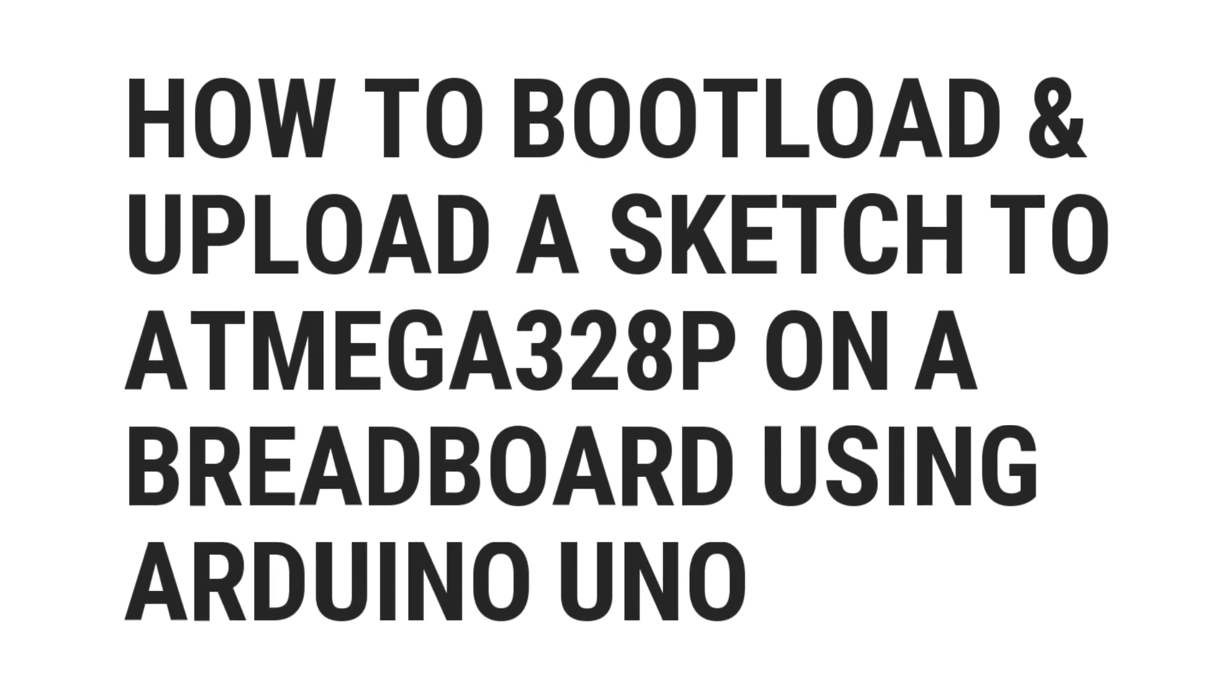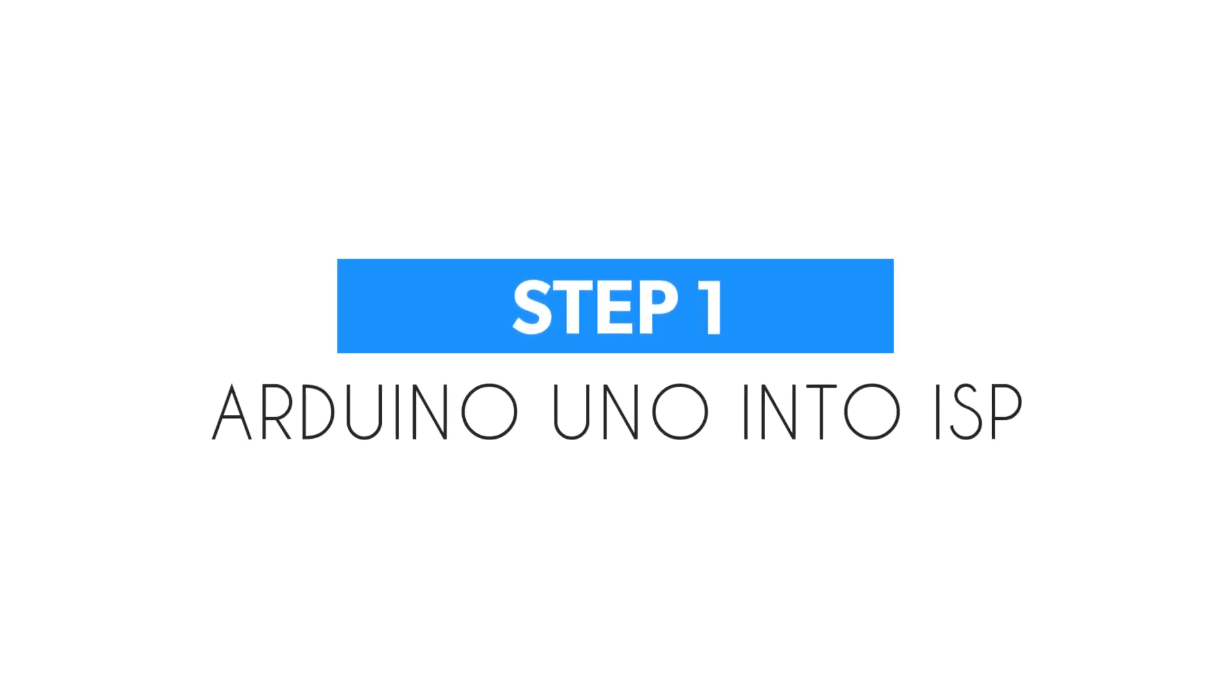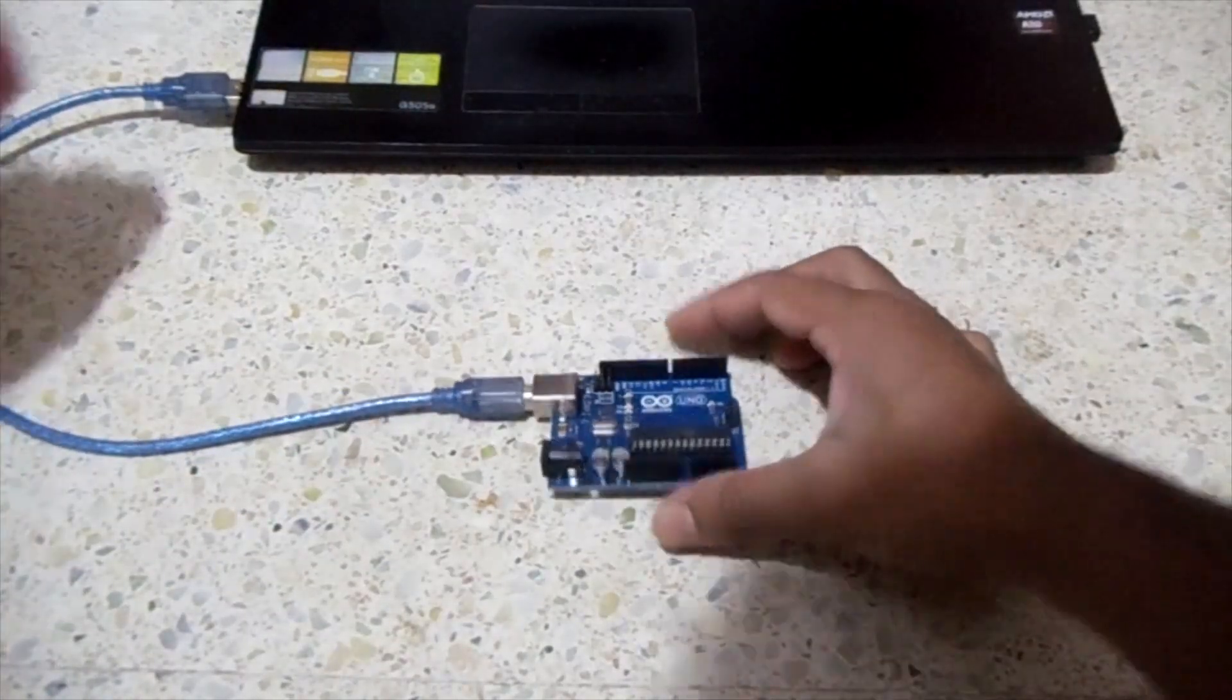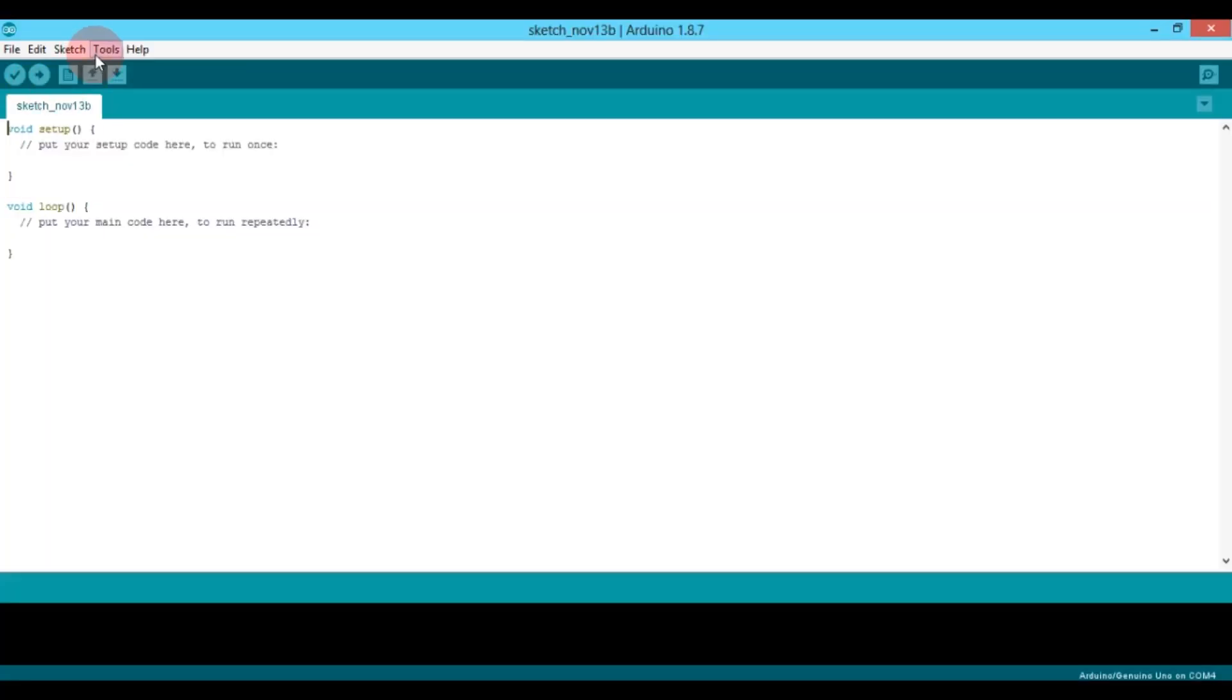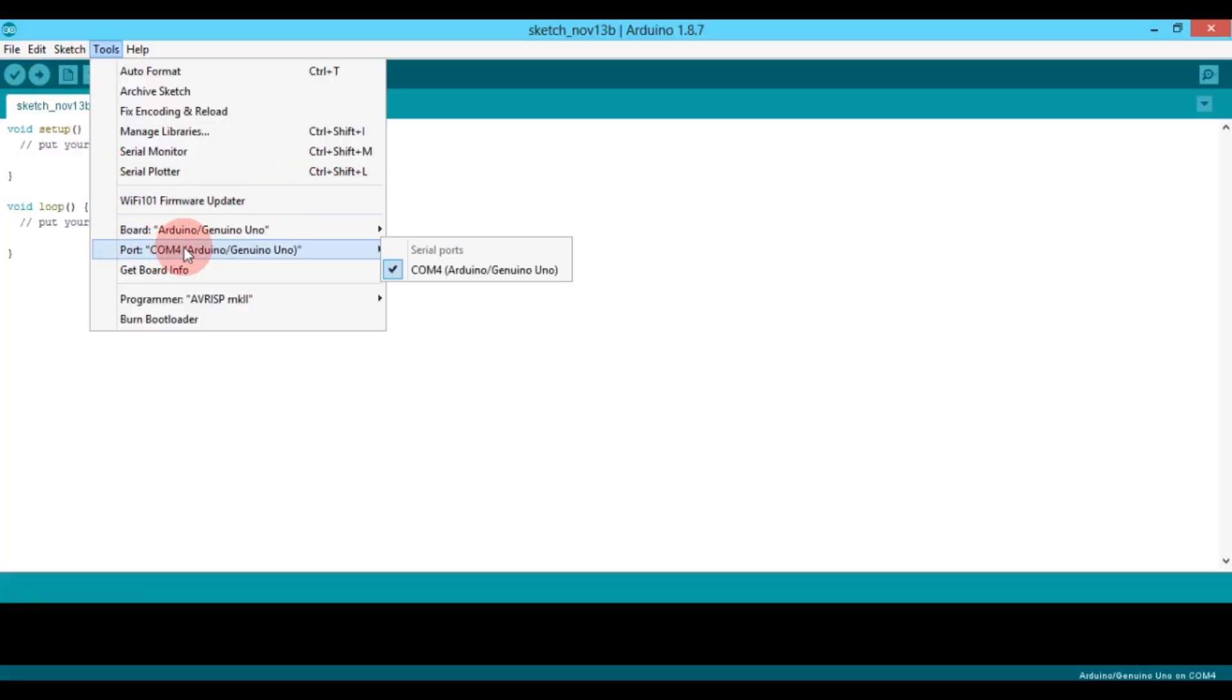Hello guys, welcome to my channel. In this video let's see how to bootload and upload a sketch to ATmega328P on a breadboard. Step one is making your Arduino into ISP. First connect your Arduino Uno to your PC, then open the Arduino IDE and select the necessary board settings.